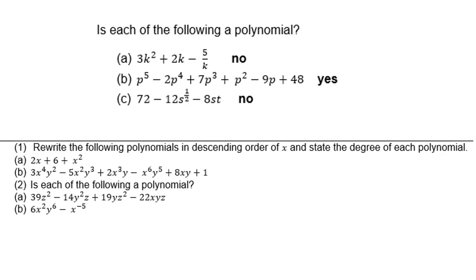Let's look at the following three examples. Is the following a polynomial? 3k² + 2k - 5/k? No, because k is in the denominator. p⁵ - 2p⁴ + 7p³ + p² - 9p + 48. The answer is yes. C: 72 - 12s^(1/2) - 8st. The answer is no because the exponent is a fraction.